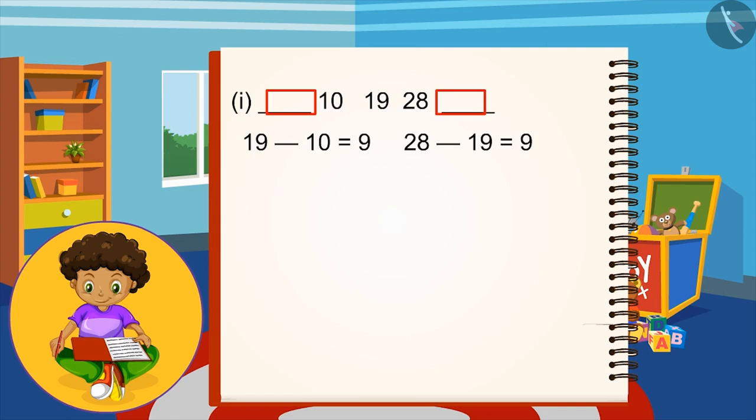So 10 plus 9 is 19, or 19 minus 10 is 9. To find this number we will reduce 9 from 10. The answer is 1.